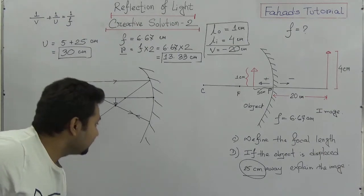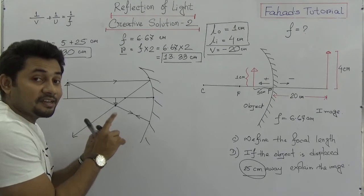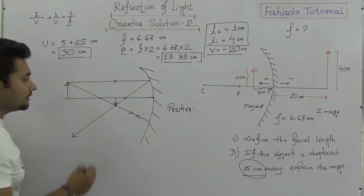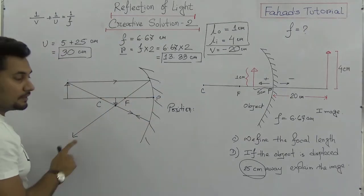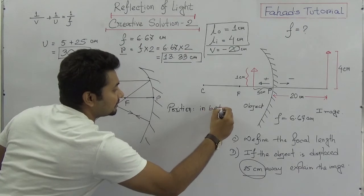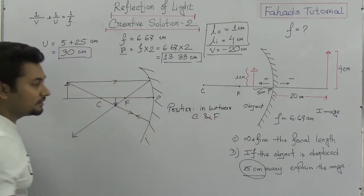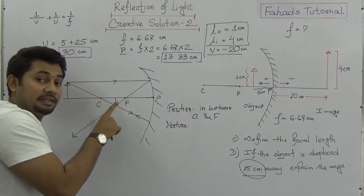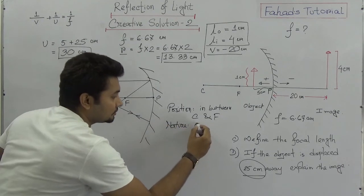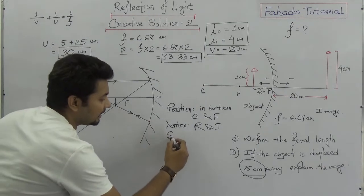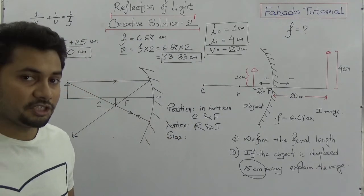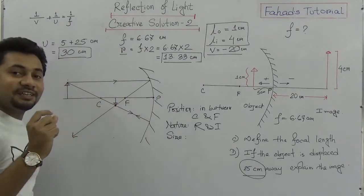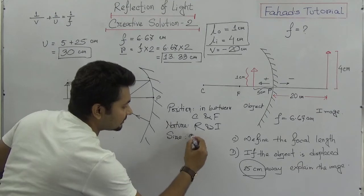The nature of the image: the position is between C and F. The nature of the image is real and inverted — it is definitely a real image. The size of the image is diminished, because the length of the image is less compared to the length of the object.